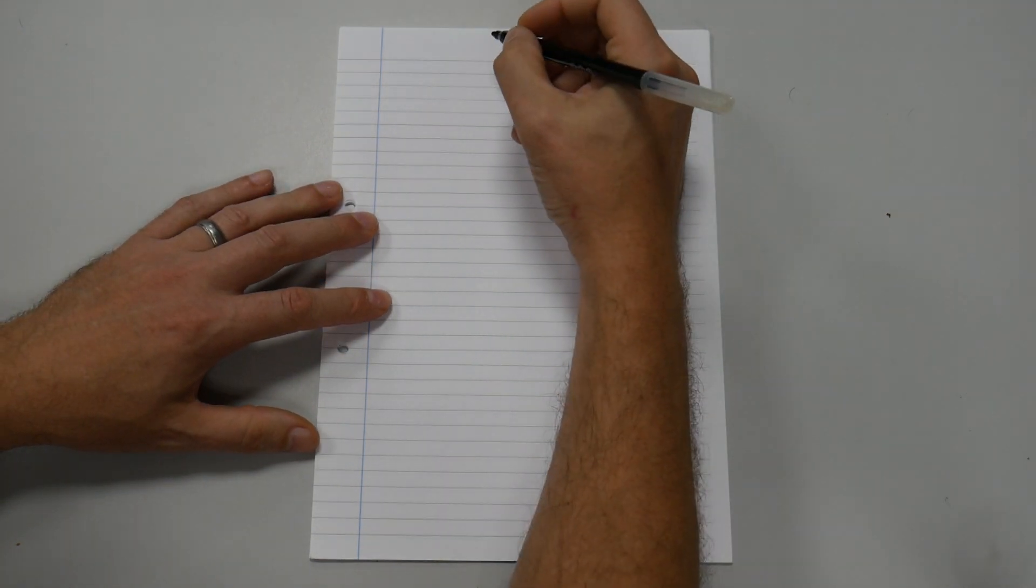Welcome to another essential formulas video for level 3. Today's formula is going to be working out current in our neutral cable.